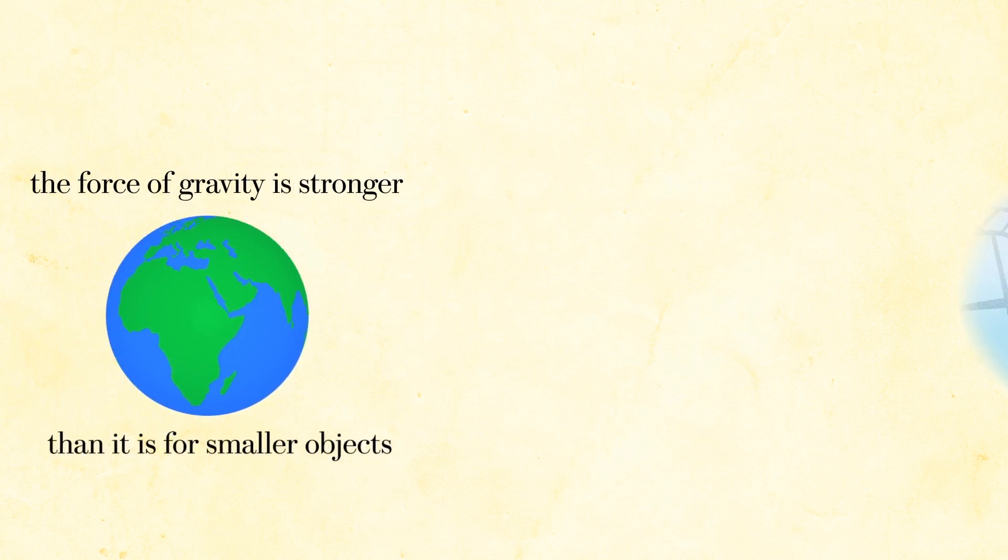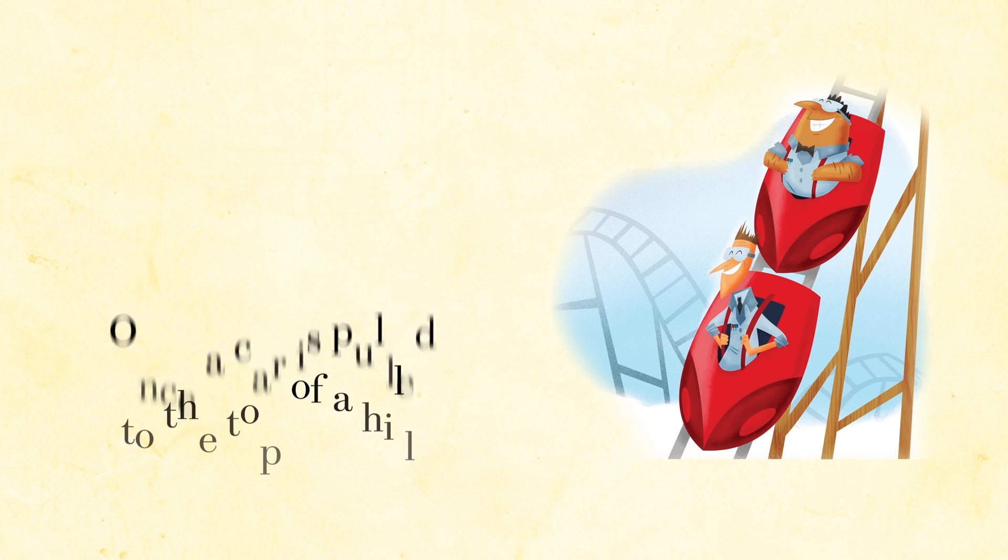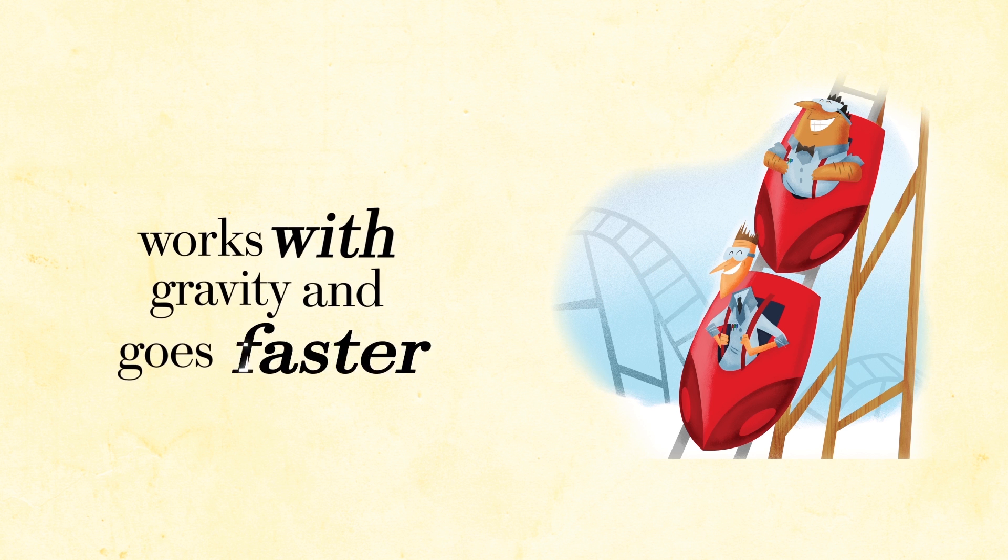Gravity is why a roller coaster car doesn't need a motor to make it go. Once the car is pulled to the top of a hill, gravity does the rest of the work. When a coaster car zooms down the track, it works with gravity and goes faster.